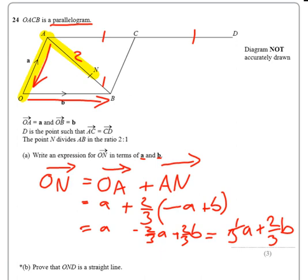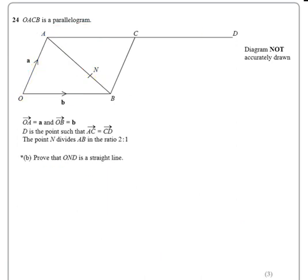Now we're going to have to use that result for part B. Prove that O-N-D is a straight line. Now the fact that we're trying to prove is that O to D is a multiple of O to N. So if we look at it,